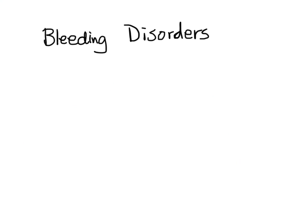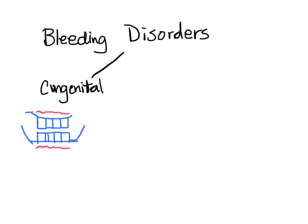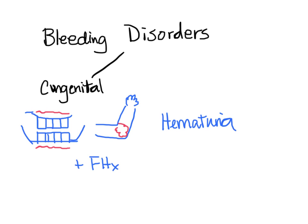The last cause is bleeding disorders that lead to GI bleeding, which can be congenital or acquired. For a congenital bleeding disorder, patients tend to have bleeding in other places as well — they can bleed from their gums, internally into their joints, or have hematuria when they urinate. They might also have a family history of bleeding disorder. For acquired bleeding disorders, it is often due to drugs. The patient can present with the same kind of bleeding from their gums, into the joint, or hematuria — the difference is that you should be able to find an offending drug.